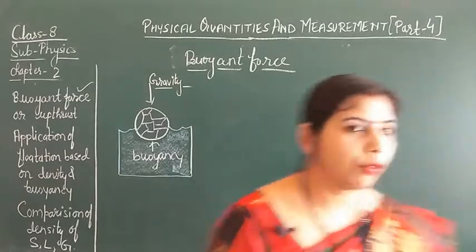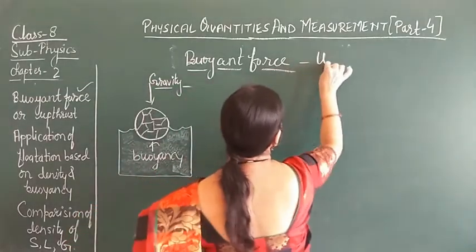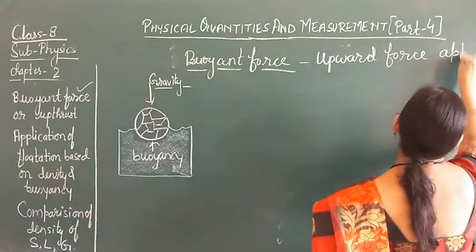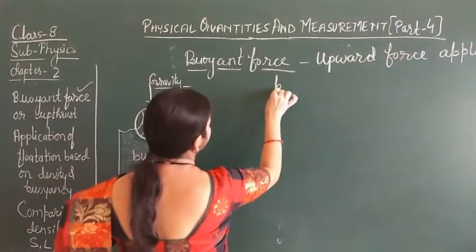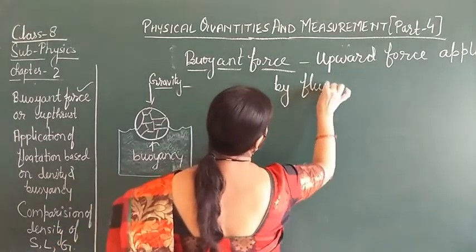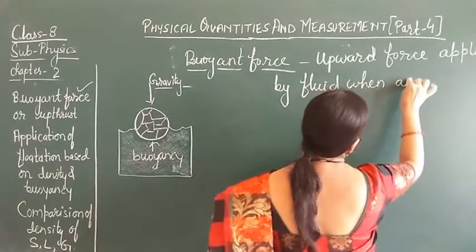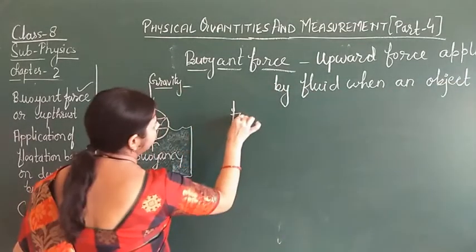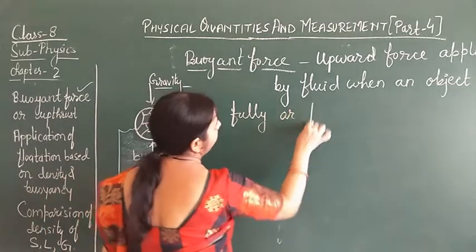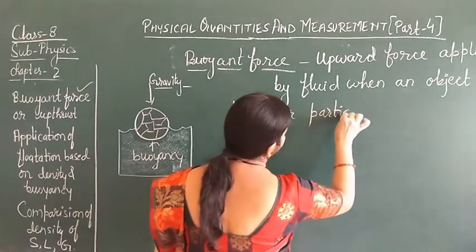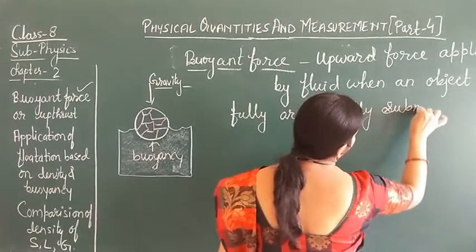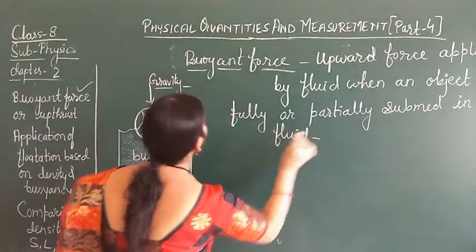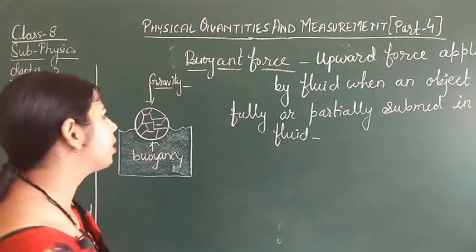So let's write the definition of buoyant force or upthrust: the upward force applied by a fluid when an object is fully or partially submerged in the fluid is called the buoyant force or upthrust.